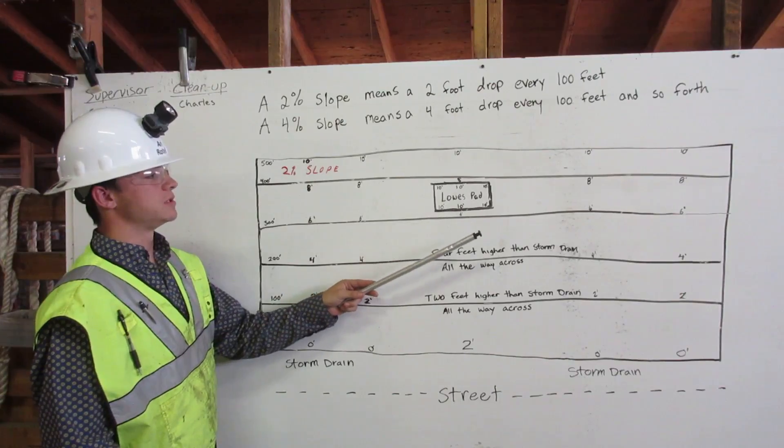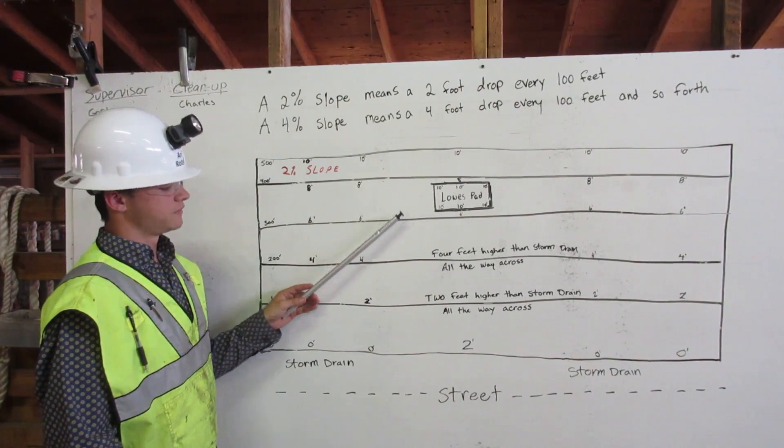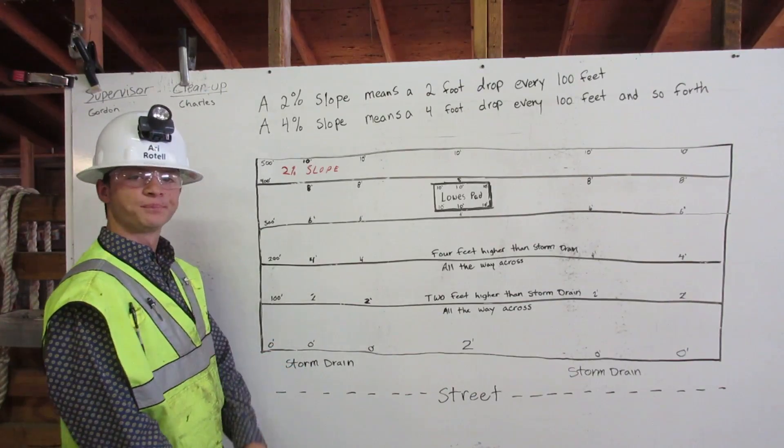Here we have our Lowe's pad. It has to be two feet higher than the surroundings so the water will run off sideways to the storm drain. Thank you.